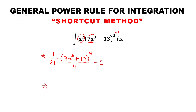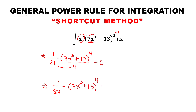To simplify, multiply 21 and 4, so this is 1 over 84, then times (7x³ + 13) to the power 4, plus C.